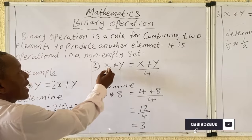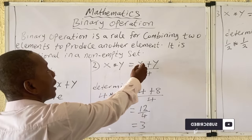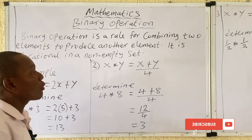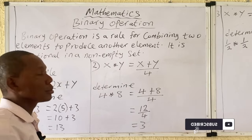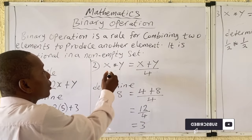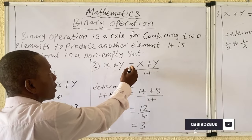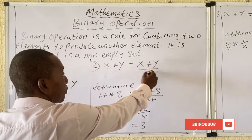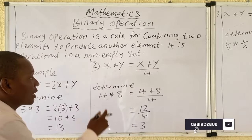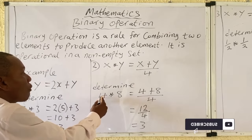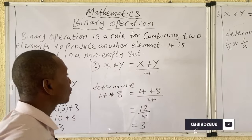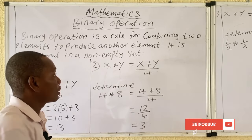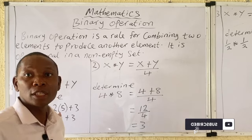Now question number two: the operation x★y = (x + y) / 4. This is the rule given. Note that each question may have a different rule — this rule is different from the previous one. You are asked to determine 4★8.